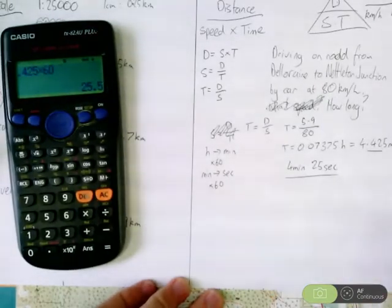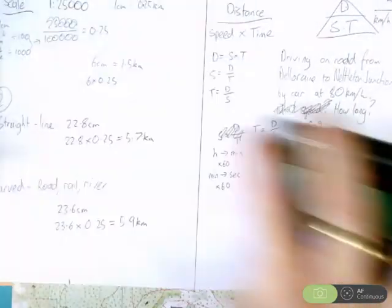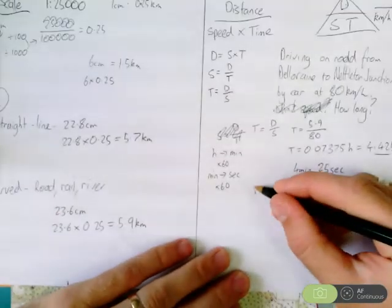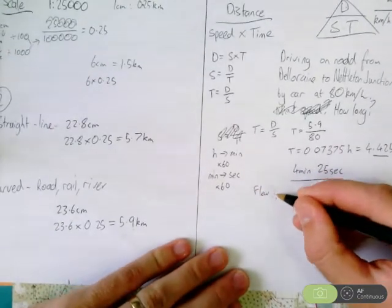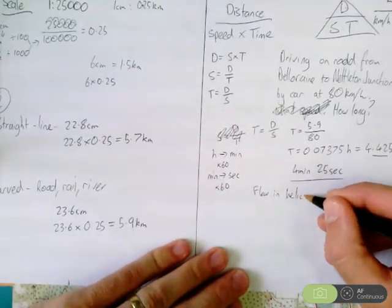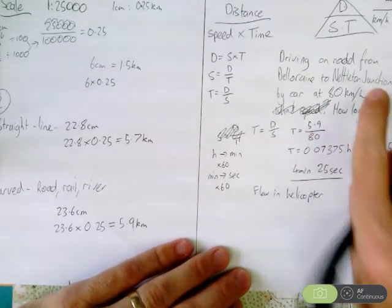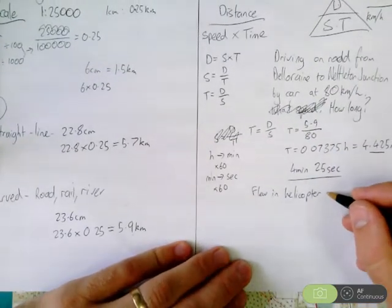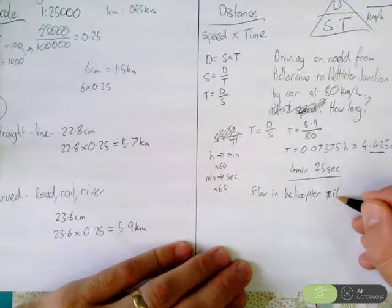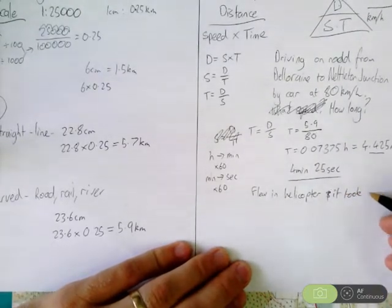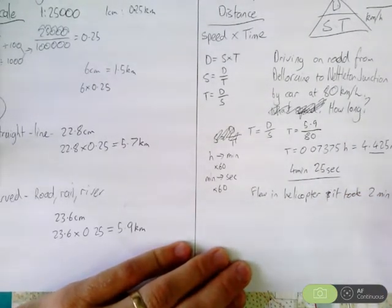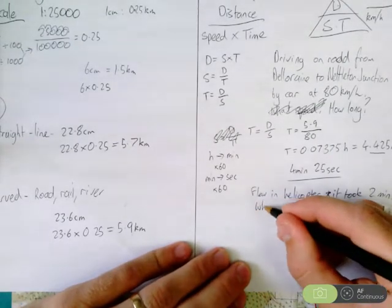Now, next question. We flew in a helicopter, from the same Deloraine to Nettleton. And it took only 2 minutes. What speed were we going?